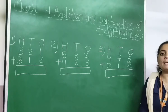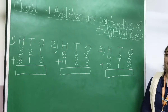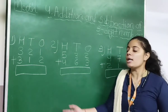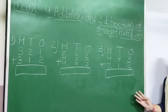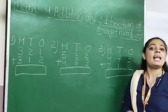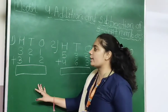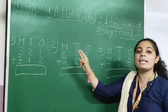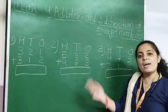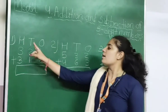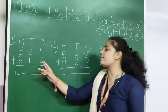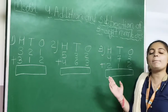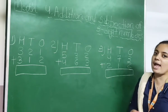So students, let's see more examples of addition of 3 digit numbers. Look here, there are 3 examples. Let's calculate number 1: 321 plus 312.